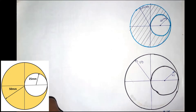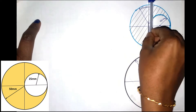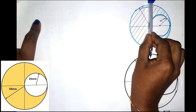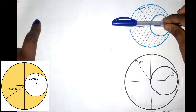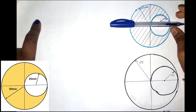The first step is to check the figure. Here, we have a figure that is symmetrical in the Y axis, but not symmetrical in the X axis.